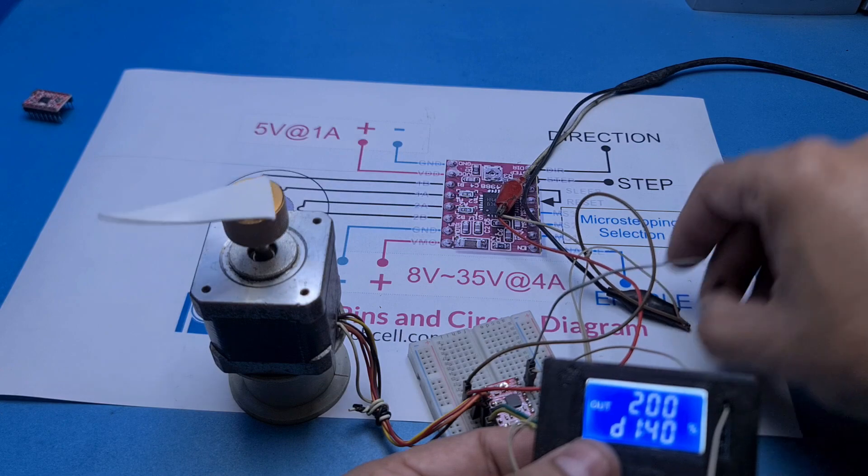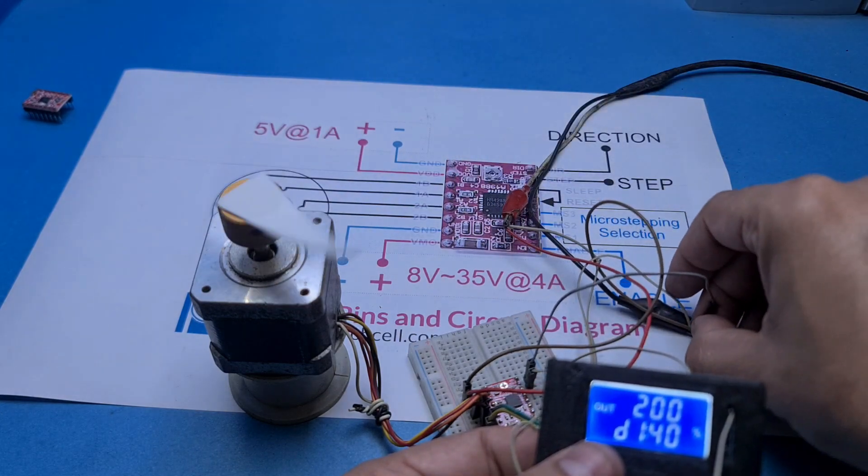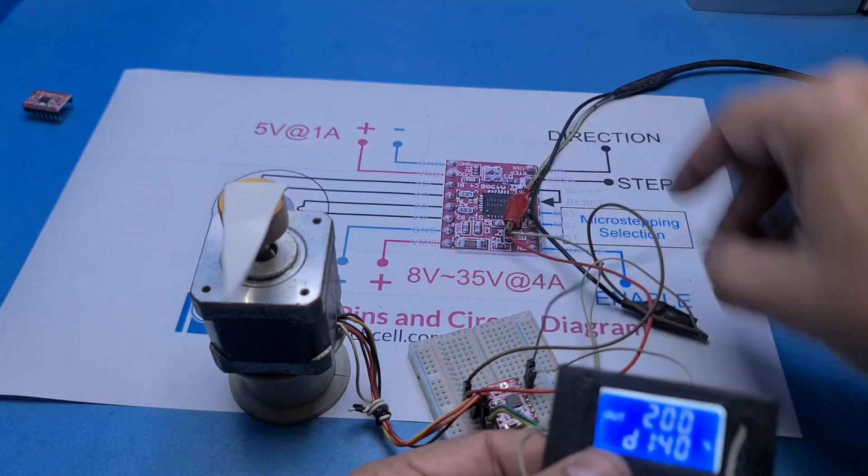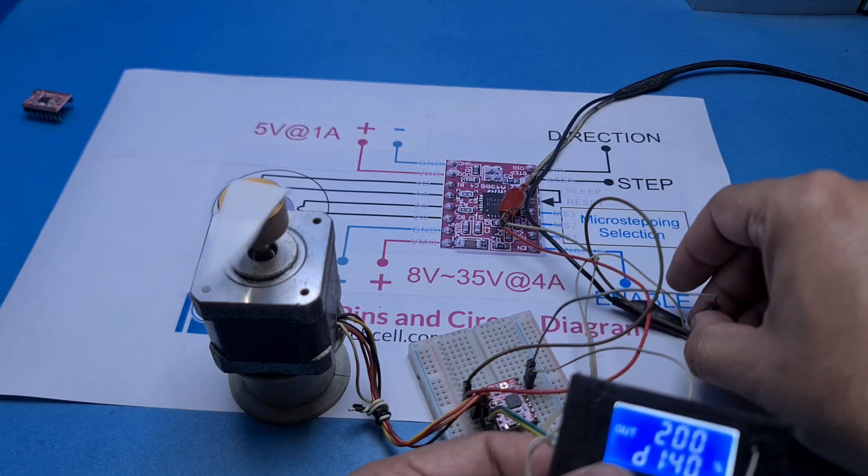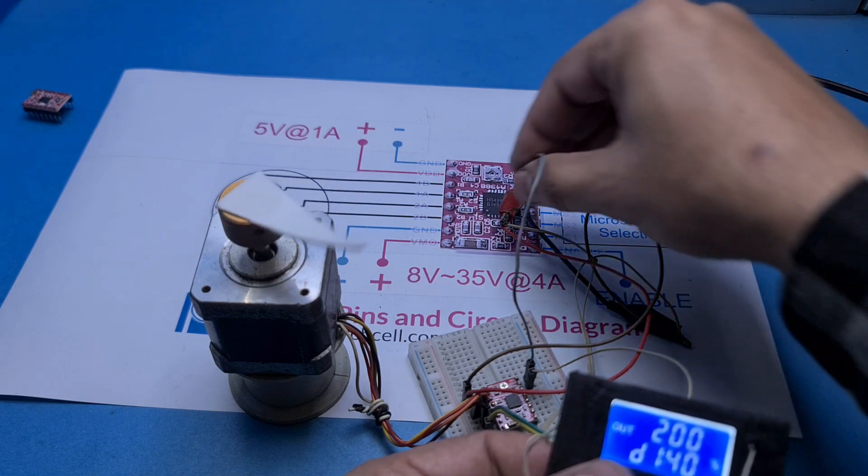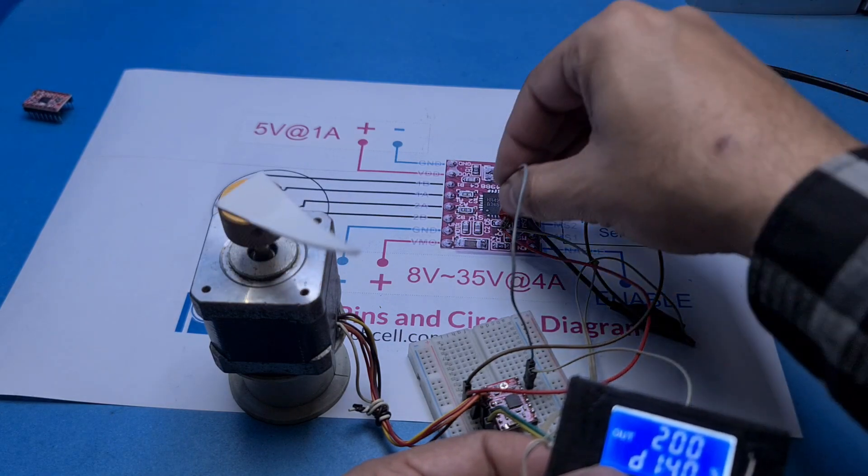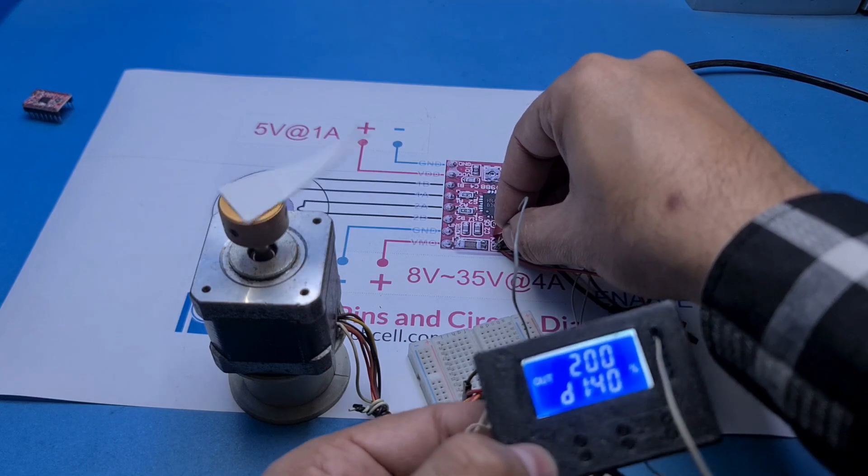By the way, if you don't connect the direction pin to ground or 5 volt, then the motor will behave unpredictably. As you can see, it starts to vibrate. So it is advisable to connect the direction pin with either the ground or the plus 5 volt.